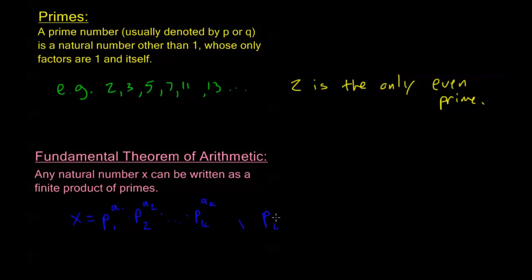Where all of these p subscript i are prime. And all of my exponents here, my ai's, are all integers. In fact, I can do better than that. All of my ai's are going to be non-negative integers.